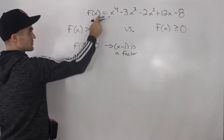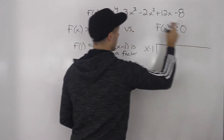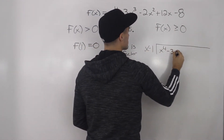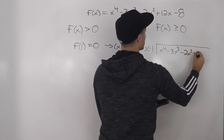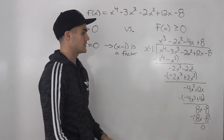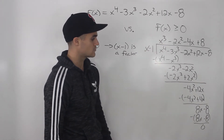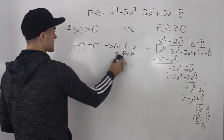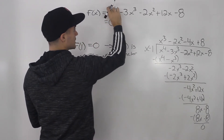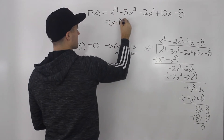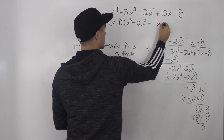We take x minus 1 and divide it into x to the 4 minus 3x cubed minus 2x squared plus 12x minus 8. When we do that long division, we end up getting x cubed minus 2x squared minus 4x plus 8 as the quotient, with remainder 0. So we've split the polynomial into (x minus 1) times (x cubed minus 2x squared minus 4x plus 8).